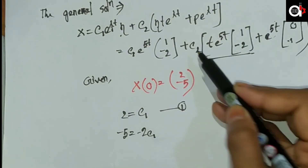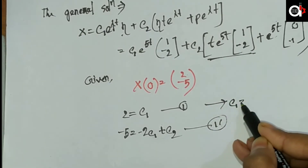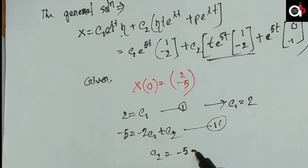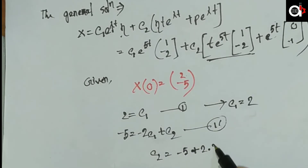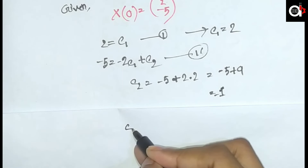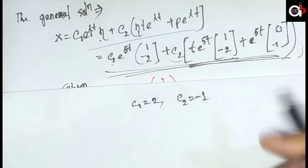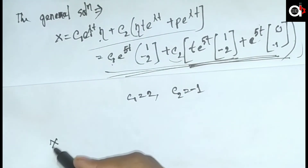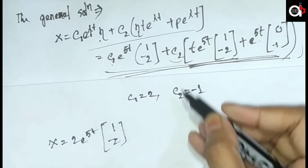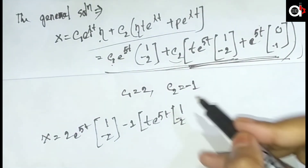From the equations at t equals zero: the first equation gives c1 plus c2 times 0 equals 2, so c1 equals 2. The second equation gives minus 2c1 plus c2 equals minus 5. Substituting c1 equals 2: minus 4 plus c2 equals minus 5, so c2 equals minus 1. Therefore c1 equals 2 and c2 equals minus 1.